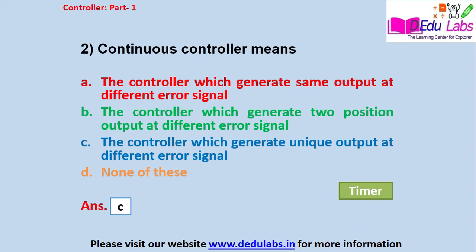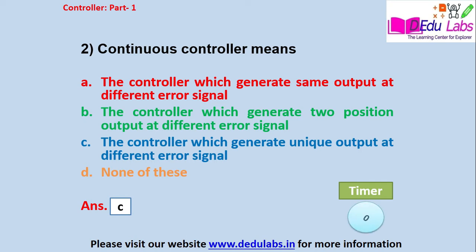Here, continuous means that every unique error has some unique output. If error changes continuously, the output is always provided continuously.